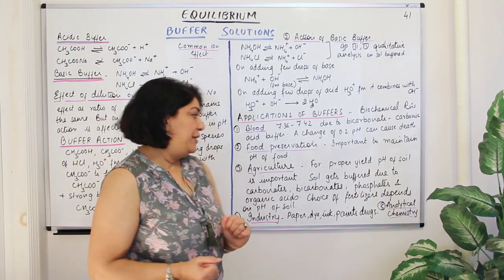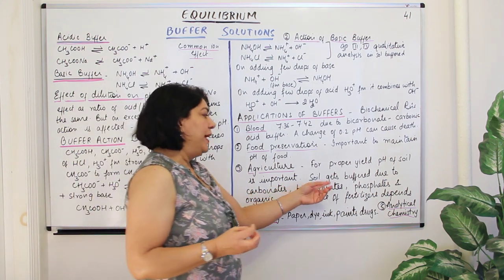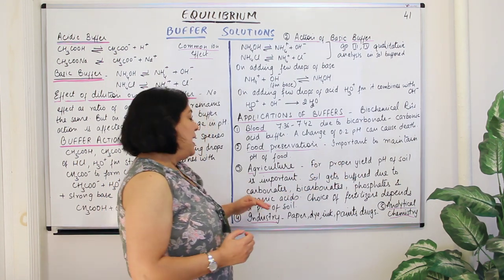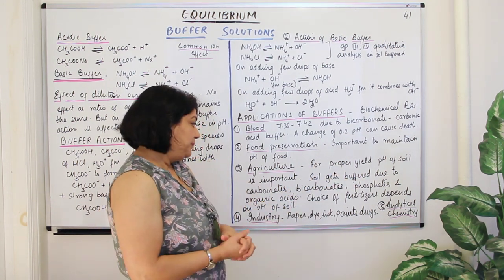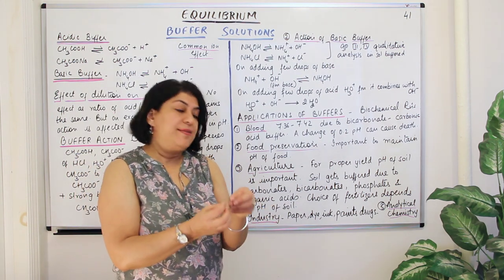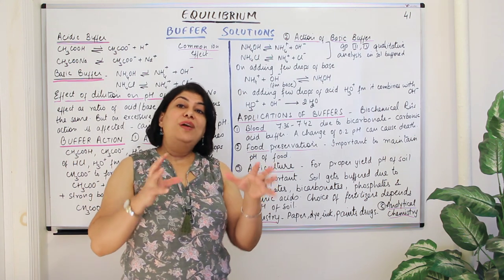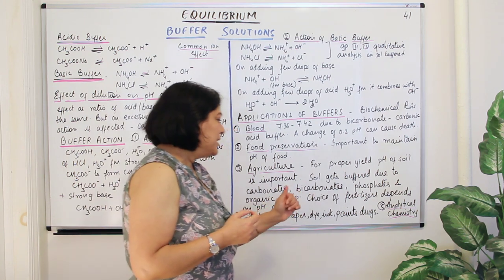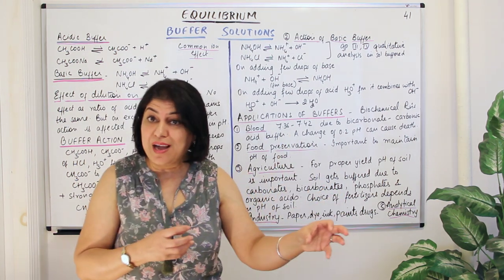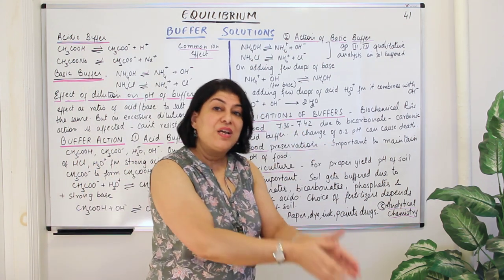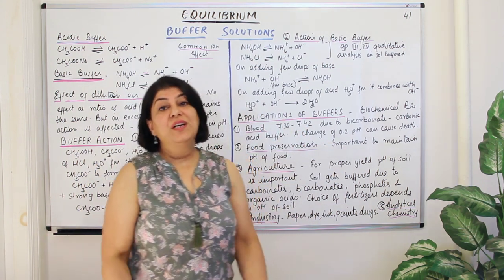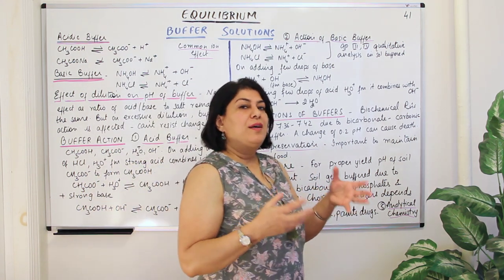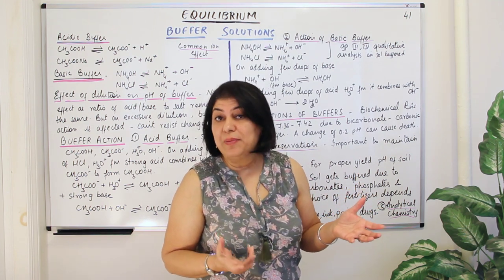Soil can be buffered with the help of carbonates, bicarbonates, phosphates, and organic acids added to it. The choice of fertilizer depends on the pH of the soil — whether you add a phosphate, carbonate, or bicarbonate fertilizer depends on what is needed — because you do not want to add a fertilizer that makes the pH inappropriate for plant use.